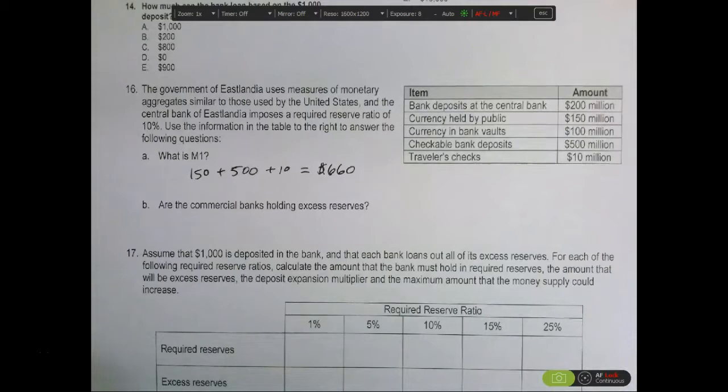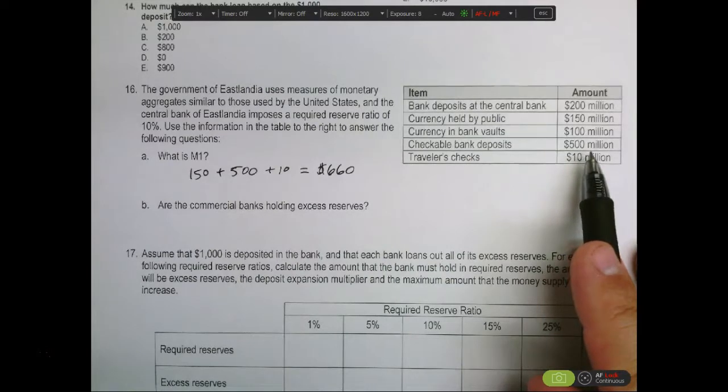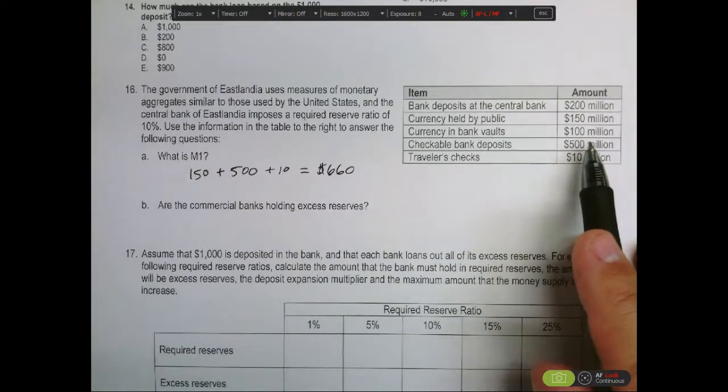When we look at the total amount of money in the checkable bank deposits, we see it's $500 million. So the banks should be holding $50 million in the vault if they were to loan all of the money that they could.